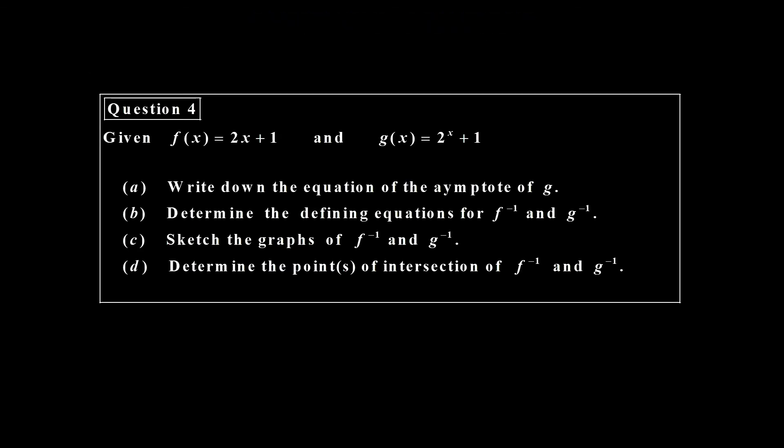Question four. Again, another two functions here—in this case, a linear with an exponential. We want the asymptote, we want to find the defining equations for both inverses, we have to sketch both inverses, and then we want to find the point of intersection.